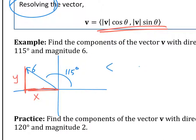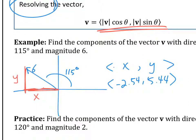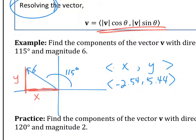Go ahead and resolve the vector into x and y components. The answer is negative 2.54, 5.44. You should always logically ask yourself: does this make sense? 115 is in quadrant 2, so x is negative — you can already see x is going to the left, so your answer has to be negative. If it's not negative, check your angle or make sure your calculator is in the right mode.